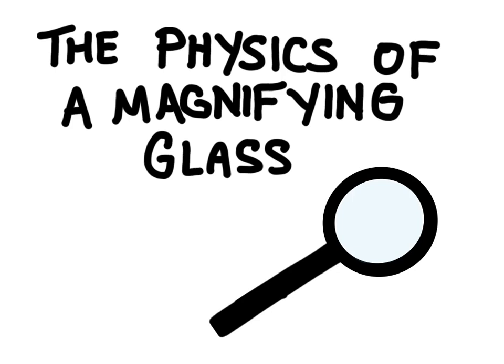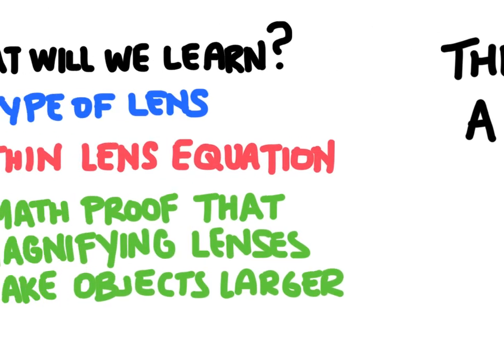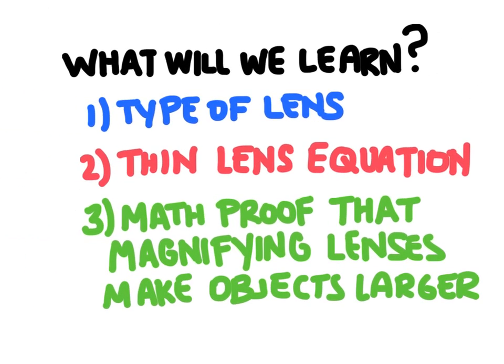In this video we're going to learn about how a magnifying glass works. In order to understand the physics behind a magnifying glass we need to learn first what type of lens a magnifying glass is made up of, then we're going to learn the thin lens equation, and then finally we'll use the thin lens equation to demonstrate mathematically that magnifying glasses make objects appear larger.